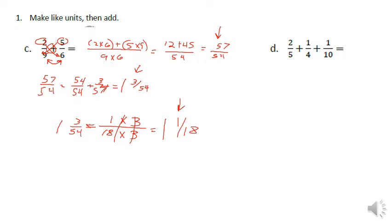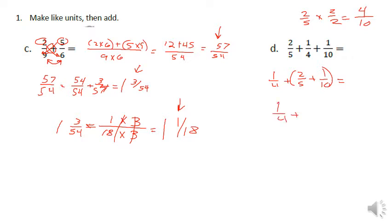For problem D with three fractions, you don't have to add all three at the same time. We have one quarter plus two fifths plus one tenth. Instead of always using the smiley method, look for common multiples first. Two fifths can easily be turned into tenths: multiply the denominator five by two, so multiply the numerator two by two to get four. That gives us one fourth plus four tenths plus one tenth, which combines to one fourth plus five tenths.